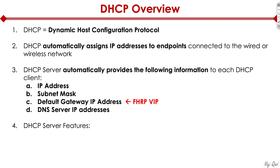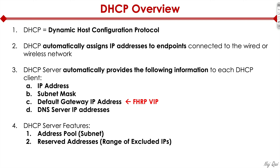Here are some DHCP server features we can configure. We can define an address pool, which is basically a subnet — a range of IPs. On the DHCP server we can also define reserved addresses, which is a list of excluded IPs, and I'll show you on the CLI how that works. We can also do address binding, which is a MAC reservation — a manually defined IP address mapped to a MAC address.